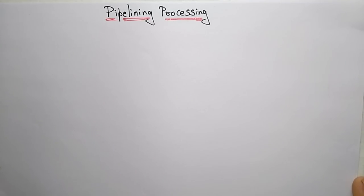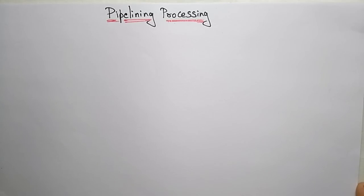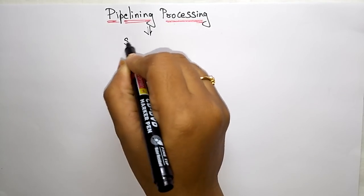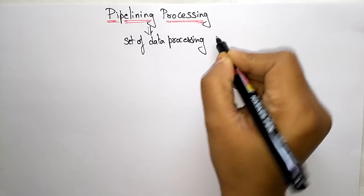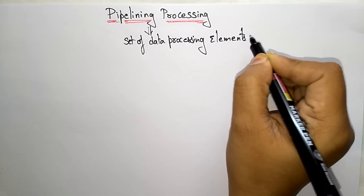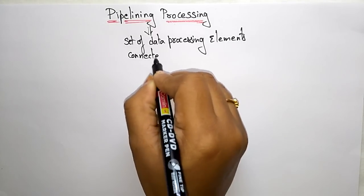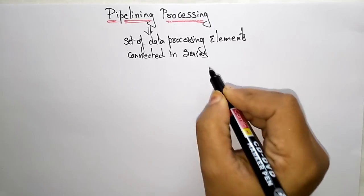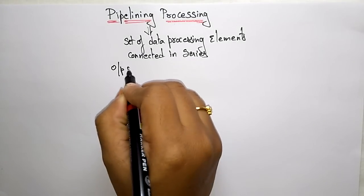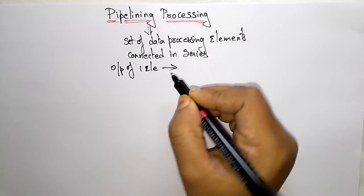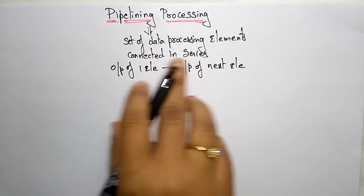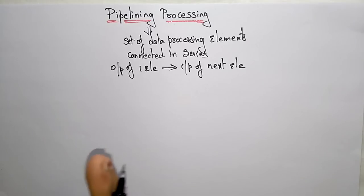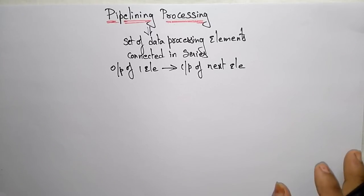The next topic is pipeline processing. In computing, a pipeline is a set of data processing elements which are connected in series, where the output of one element is the input of the next element. So it is a set of data processing elements connected in series where the output of one instruction is the input of the next instruction.